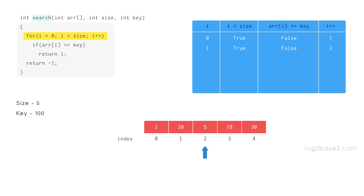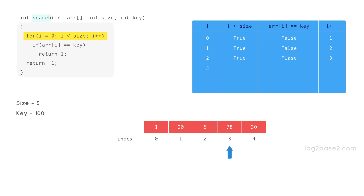Now 2 is less than 5 so the condition is true again. So compare 5 and 100 — again the comparison returns false. Now i is incremented and it becomes 3. Now 3 is less than 5 so condition is true. So compare 78 and 100 — the comparison returns false.